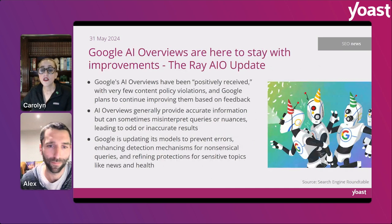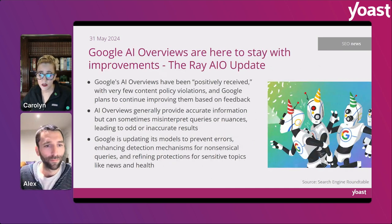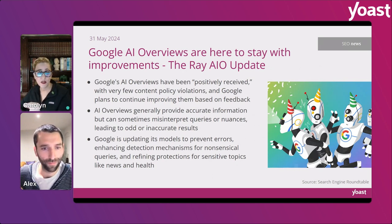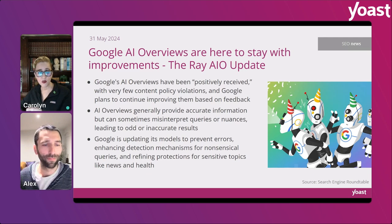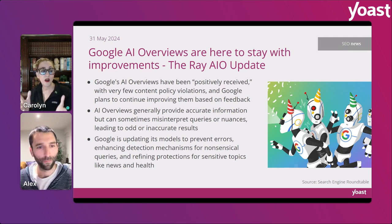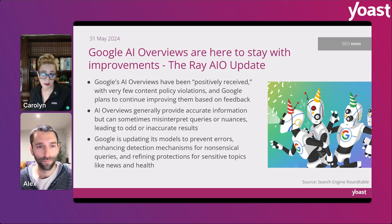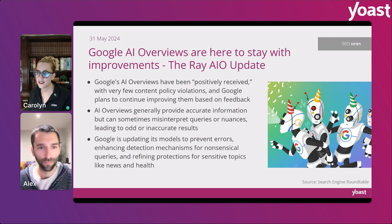Shortly after that, Google announced that the AI Overviews are in fact here to stay, but there would be some improvements — and they even named it after an SEO named Lily Ray, who has been doing a lot of work researching the overviews, tracking sites that were abusing it or being wronged by the AI Overviews, and referring those things to Google so they could investigate. It's cool to see that they are in fact listening to people and taking outside feedback.